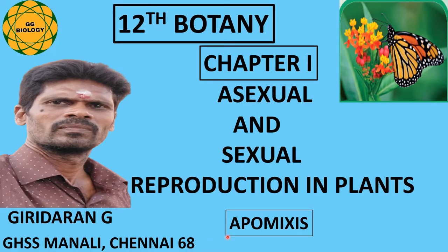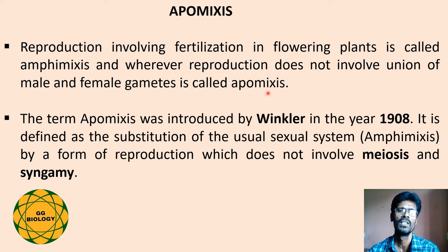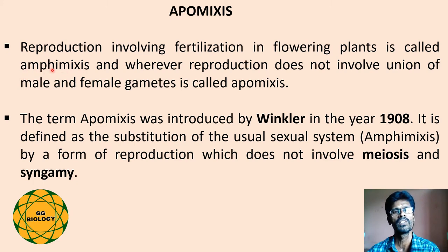The topic of this video is apomyxis, from the chapter on asexual and sexual reproduction in plants. Reproduction occurring with the union of male and female gametes in flowering plants is called amphomyxis. The other method is called apomyxis, where reproduction without involving the fusion of male and female gametes occurs. Amphi stands for 'both' and mixis stands for 'mixing', so amphomyxis means fusion of both male and female gametes.